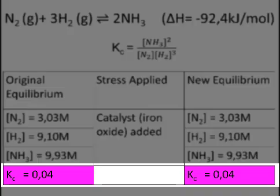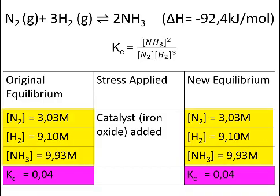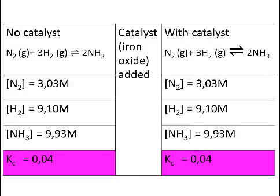Not only are the Kc values of the new and original equilibrium equal to one another, but even the concentrations of the reactants and products are unchanged. This is because a catalyst does not disturb equilibrium, so it isn't even right to refer to the original and new equilibrium because it's the same equilibrium.